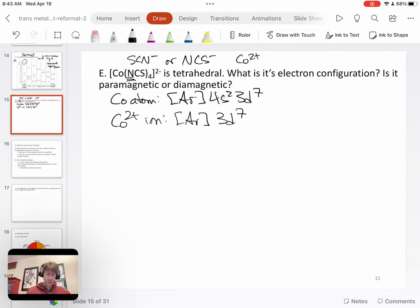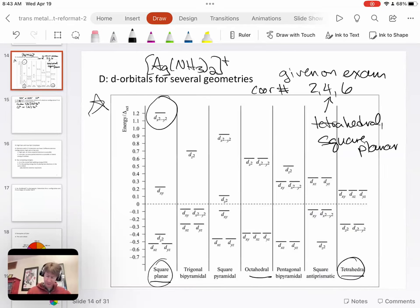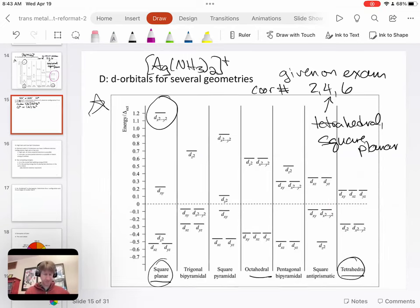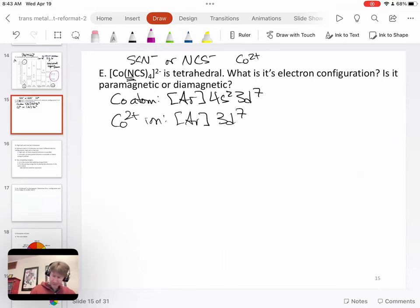We've been told that it's tetrahedral. So we go back to our tetrahedral. We have tetrahedral crystal field theory splitting right here. And we don't have to write down each of the d orbitals names, but we do have to write down two down and three up.